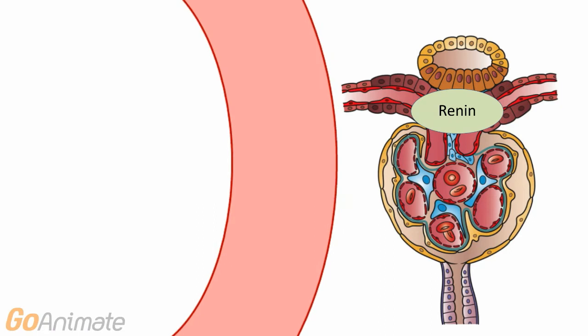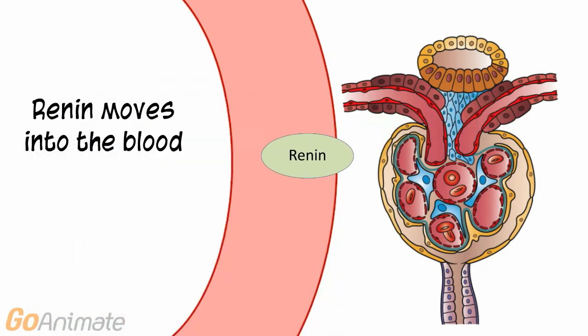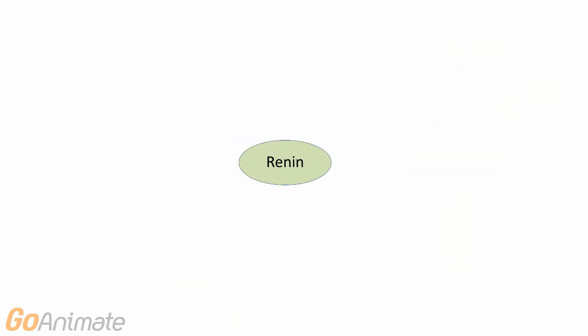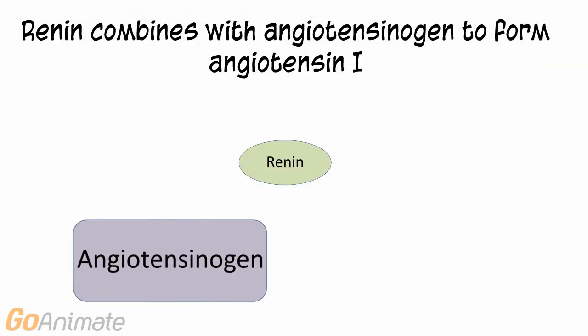Renin enters the bloodstream. In the blood, renin combines with angiotensinogen, a peptide hormone, to form angiotensin 1.